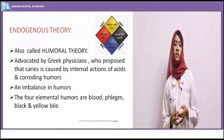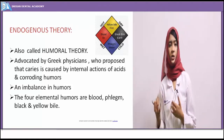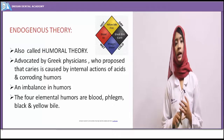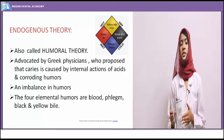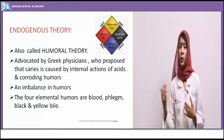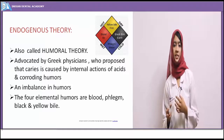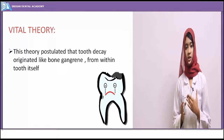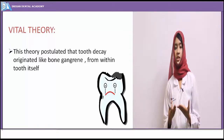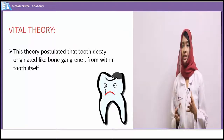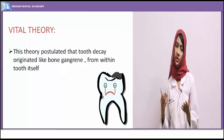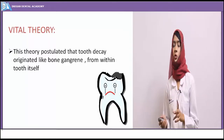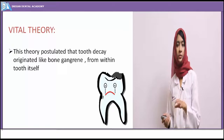The endogenous theory, also known as the humeral theory, was advocated by Greek physicians. According to them, the balance or imbalance of the four humours — blood, phlegm, black bile, and yellow bile — is responsible for causing caries, which is caused by internal action of acid and corroding humours. Another endogenous theory is the vital theory, which states that caries originated from within the tooth — similar to how bone gangrene arises from within the bone, decay arises from within the tooth itself.